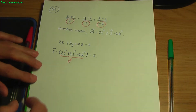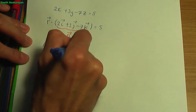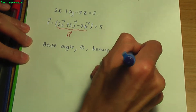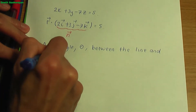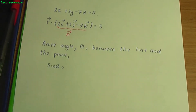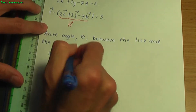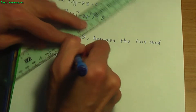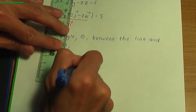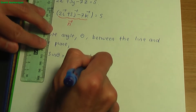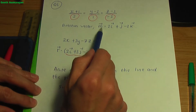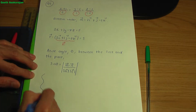Now let's use the formula to work out the acute angle θ between the line and the plane. The formula is sin θ = |m·n| / (|m| × |n|). To use this formula we need to calculate m·n, the modulus of m, and the modulus of n. Let's work out m·n as a side calculation.